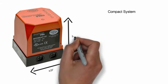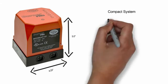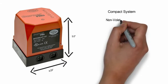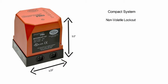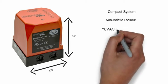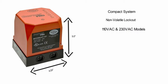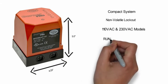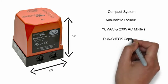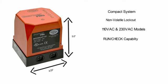Pre-programmed operational timings ensure safe operation of the burner system. Non-volatile lockout capability is used to store lockout information even in the event of a power outage. 110VAC and 230VAC models available for greater flexibility in your application. Run check capability allows the system operator to stop the program sequence in the purge, ignition, PTFI and MTFI positions during system commissioning.